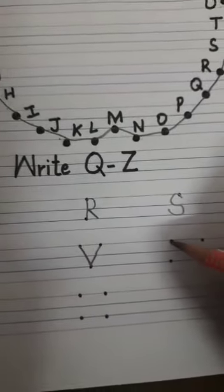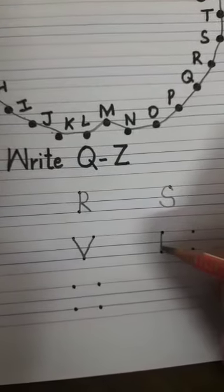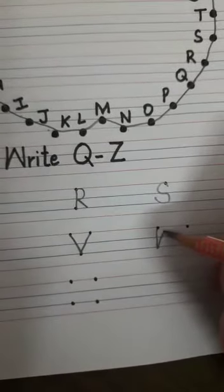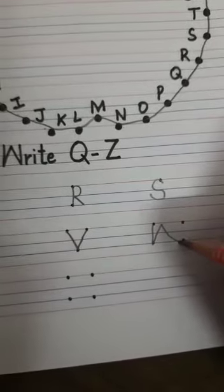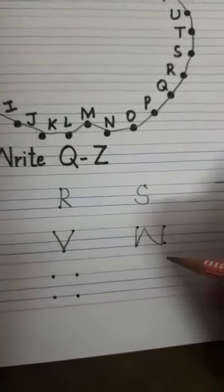V ke baad aata hai? W. Again. Up. Down. Then up. This is letter W.